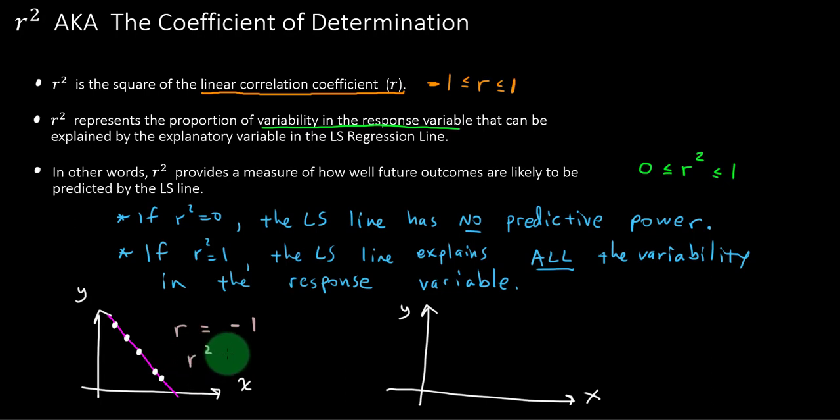R squared would be a positive one. Because based on this sample data, if you change x, you know exactly what to expect in y, right? Because look how perfect it is. So you would feel very good about the predictive ability of this line to make predictions about y based on x. Because the line accounts for all the variability in the response variable.